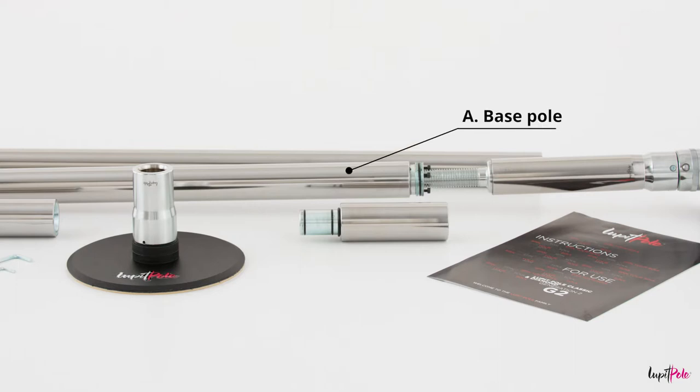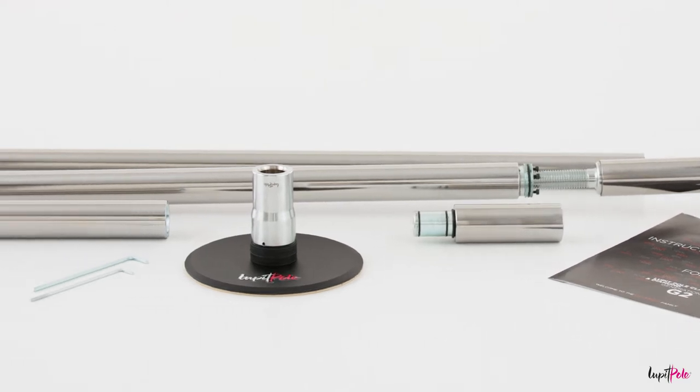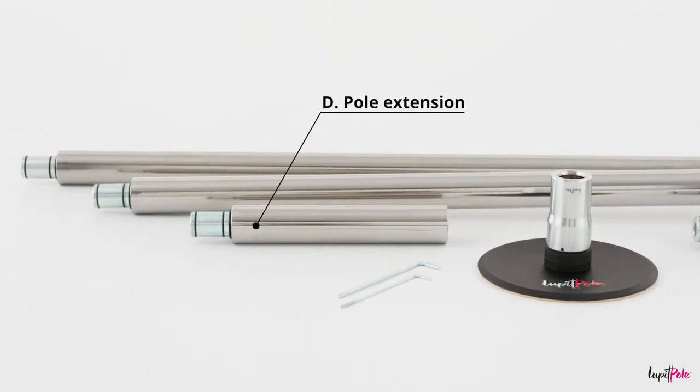A. Base Pole, B. Main Pole, C. Pole Extension, Instructions for Use, D. Hole Extension, E. Upper Disc, G. 2 Allen or Hex Keys for Standard Lock, 1 Allen or Hex Key for Quick Lock.